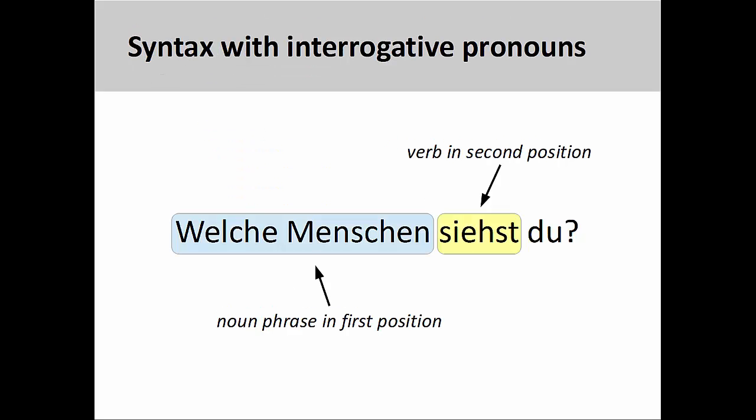Finally, it is important to remember that interrogative words always come in the first position of the sentence. Although 'welch' generally is used in conjunction with a noun, as you see here, this noun phrase is still considered to be one unit and in the first position. The verb, of course, still comes in the second position.